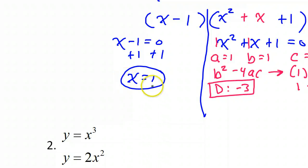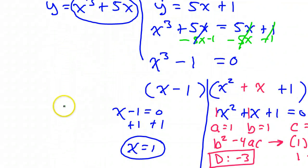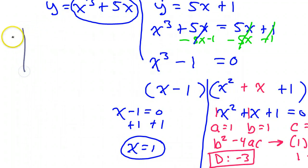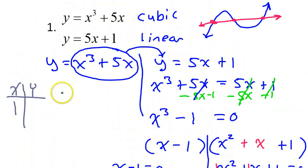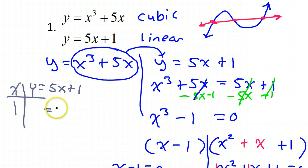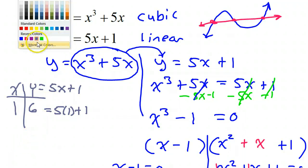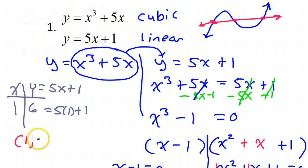Just focus on x equals 1. I'll make a table of values — it's going to be a really short table since we only have the one x value. x equals 1. I need the y value that goes with it. I could use either equation, but why not use the simple one: y equals 5x plus 1. That means y equals 5 times 1 plus 1, which is 5 plus 1, so y equals 6. So I have just the one solution: (1, 6).